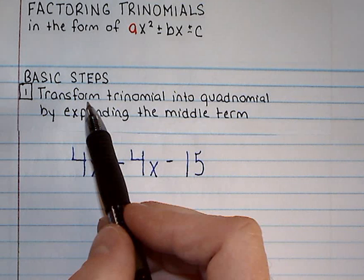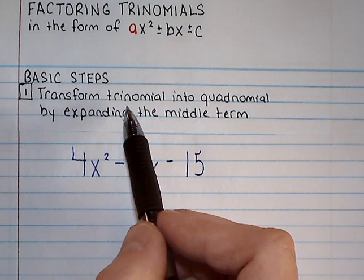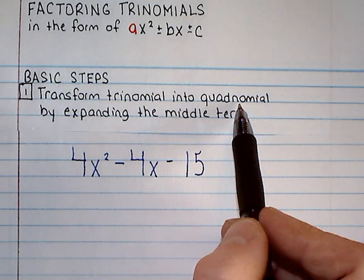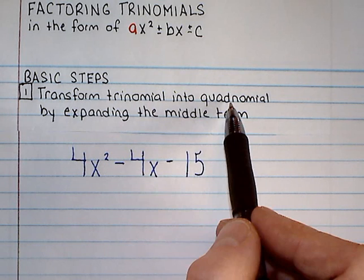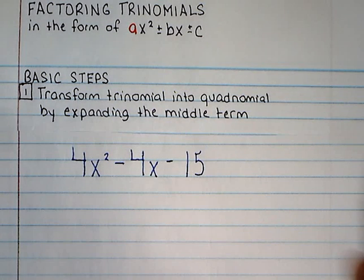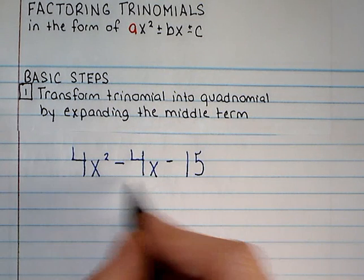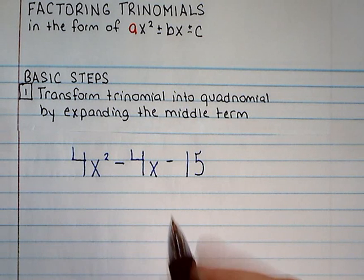In the end, we're going to end up with two binomials, and there are two basic steps. The first one is we want to transform our trinomial into a quadnomial, so from three terms into four terms, by expanding the middle term, this negative 4x. And I'll show you how we're going to do that.